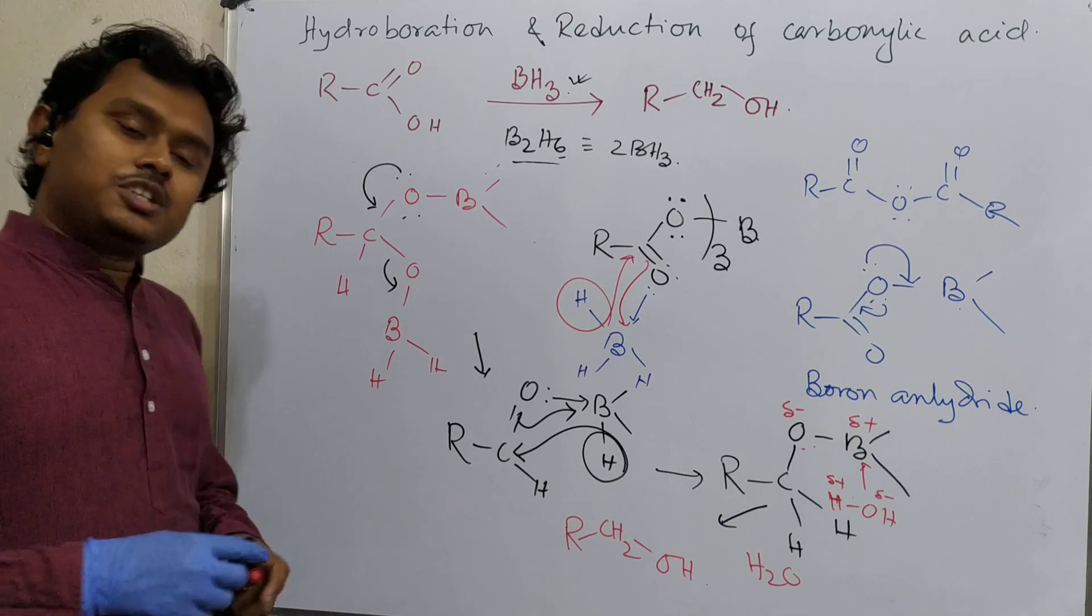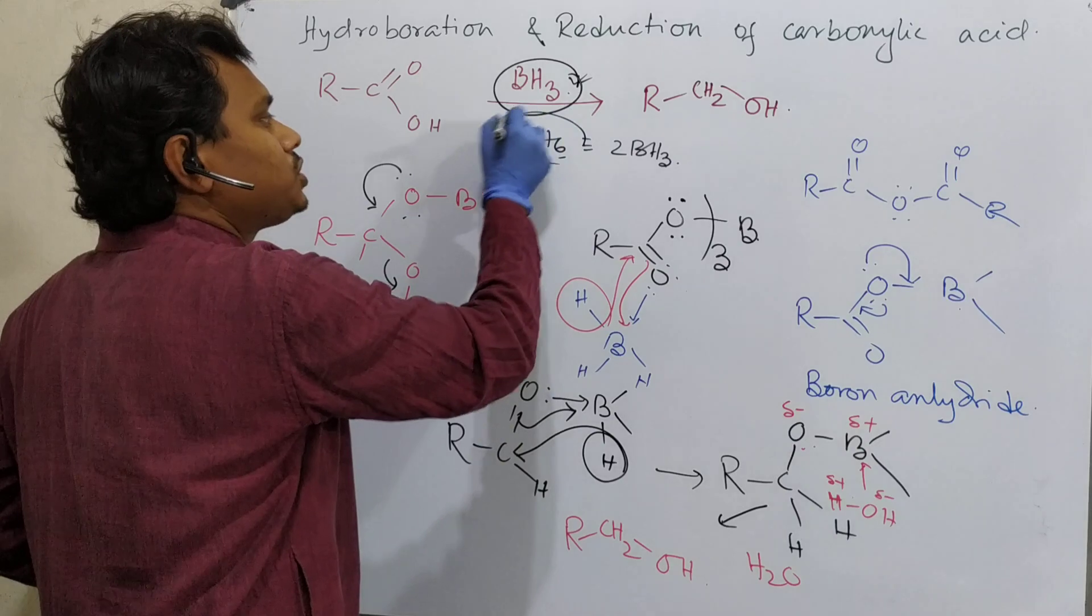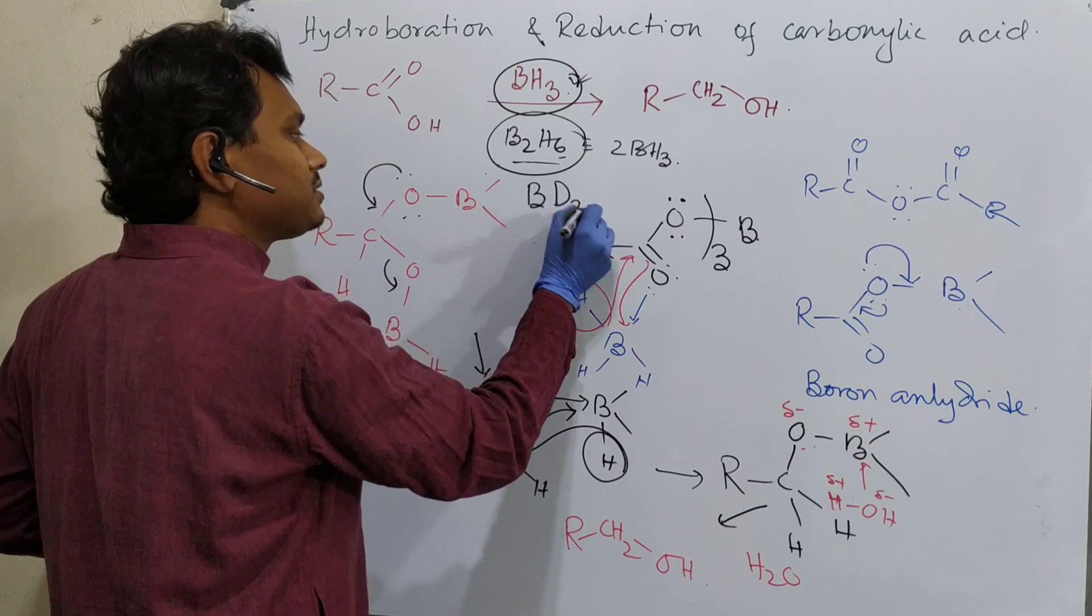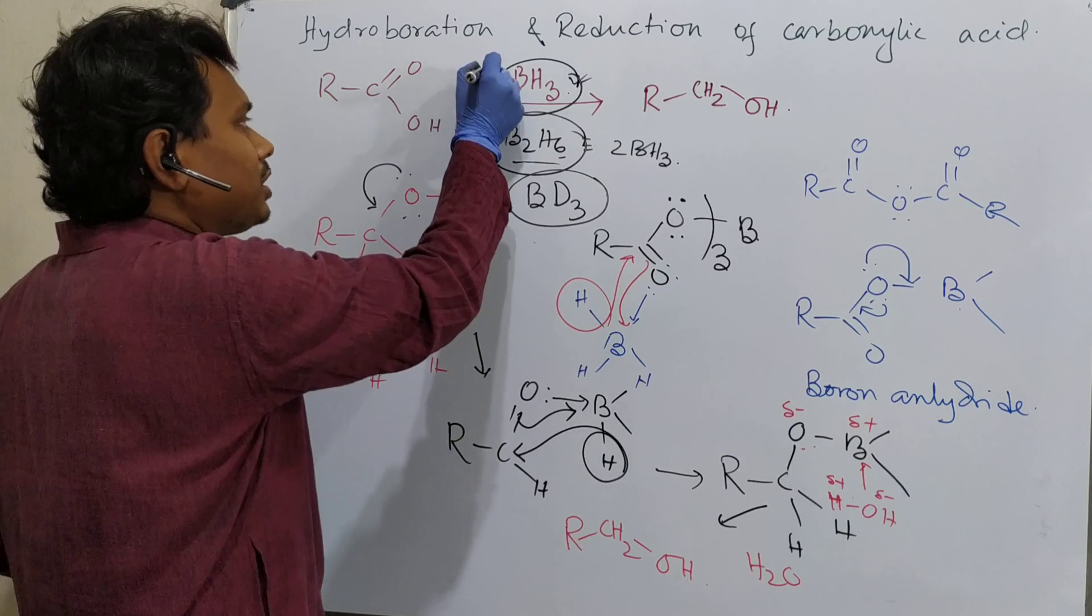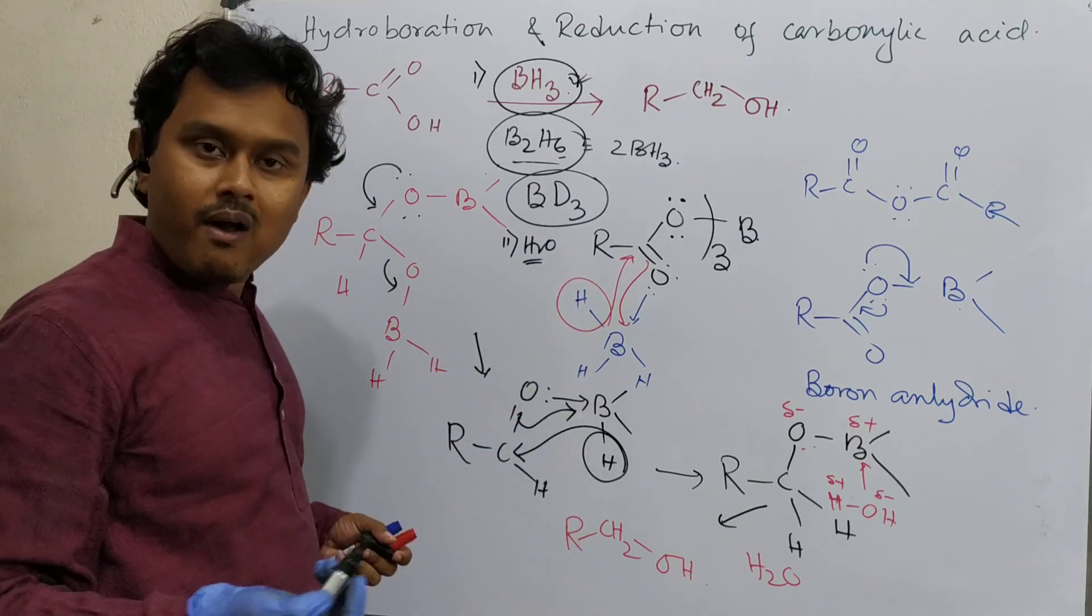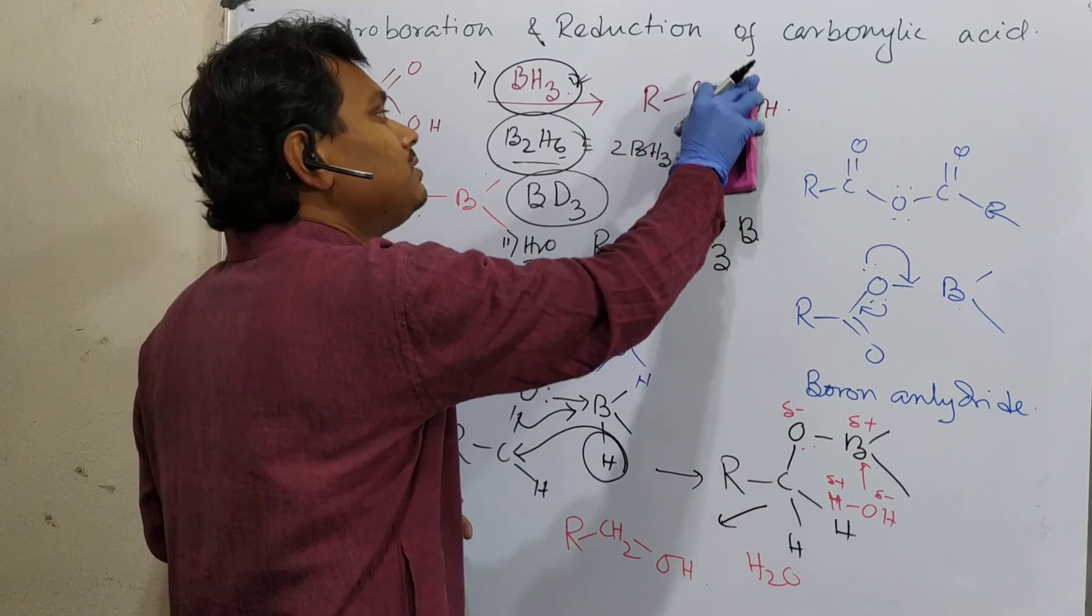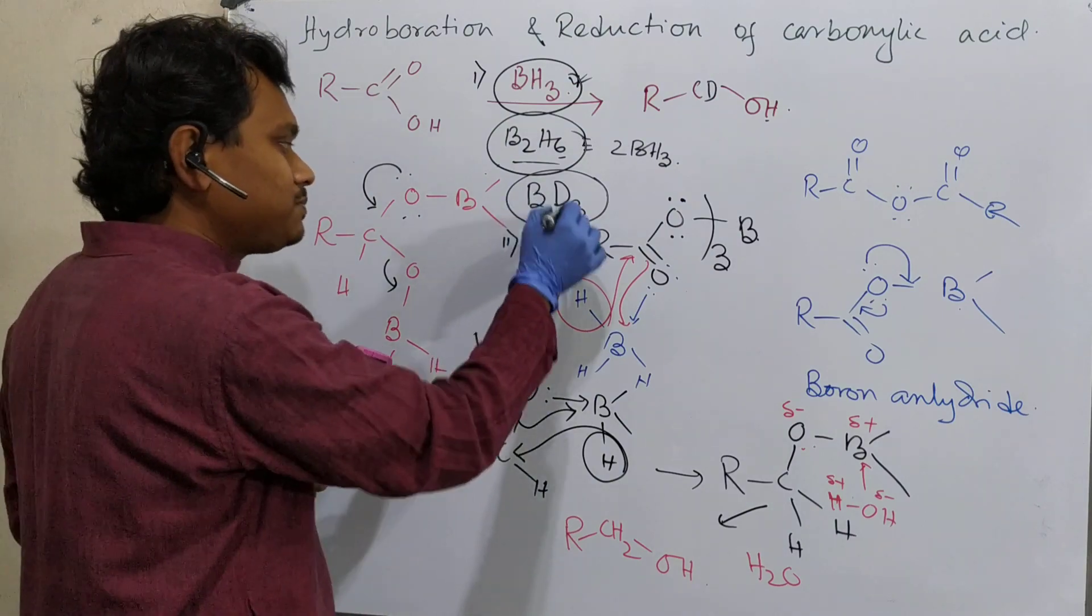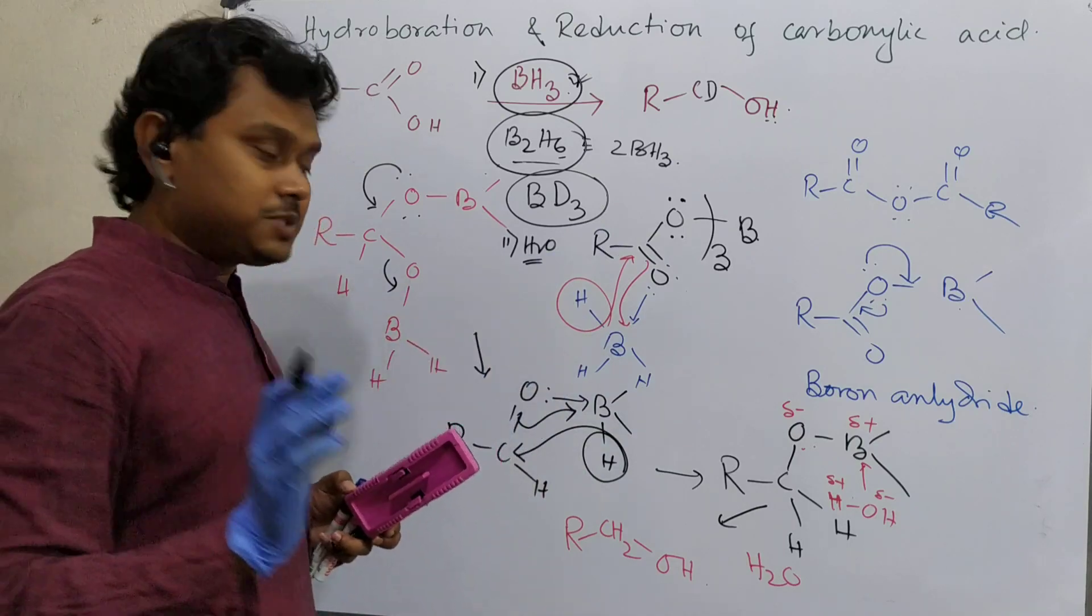Now question. One interesting question could be constructed from this type. What? Instead of BH3 or B2H6, if they take BD3, then what will be changed? BD3, point number one, and point number two, that is water or H3O plus, means alkaline water. Then what will be the product? Then this will be D, but this will be H. Similarly, vice versa question could be constructed. This is BH3, this is NaOD/D2O. What will be the conclusion? This will be D. Please be careful in this case.